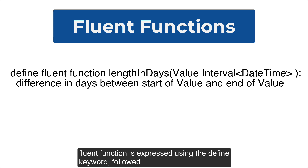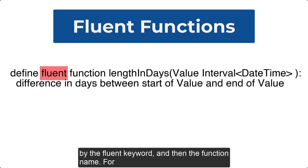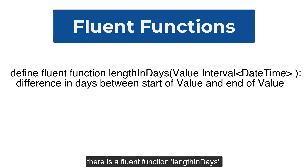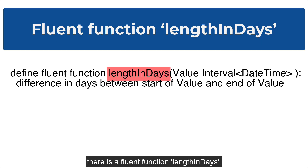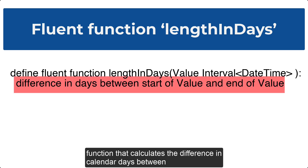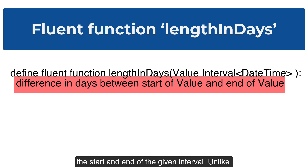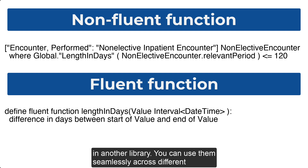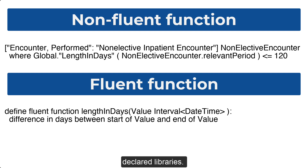A fluent function is expressed using the define keyword, followed by the fluent keyword, and then the function name. For example, in the QICore Common library in MADI, there is a fluent function length in days. Length in days is a fluent function that calculates the difference in calendar days between the start and end of the given interval. Unlike non-fluent functions, fluent functions do not require the use of the library name when invoking a fluent function defined in another library. You can use them seamlessly across different declared libraries.